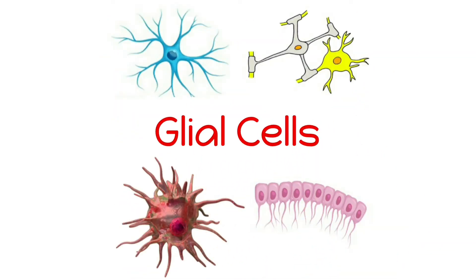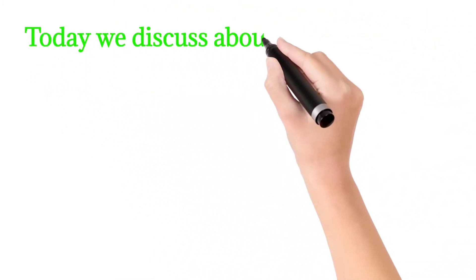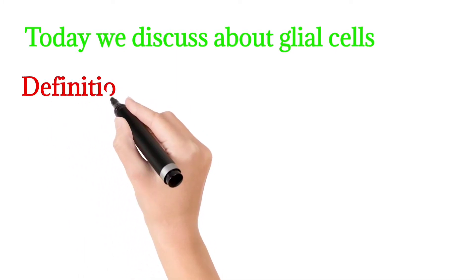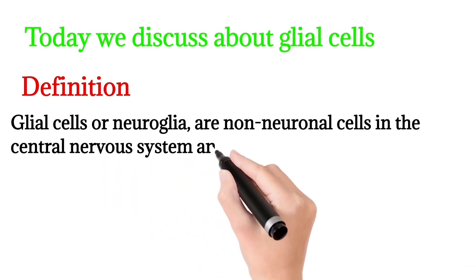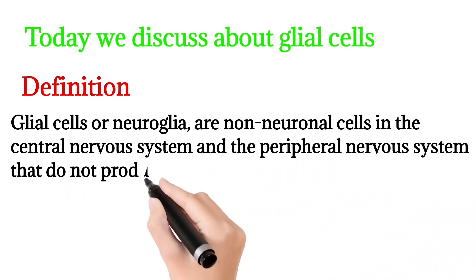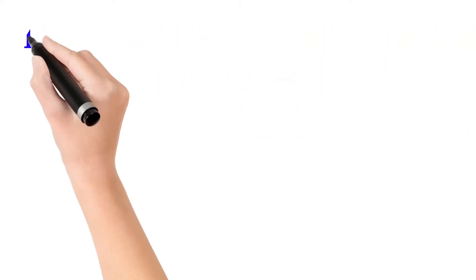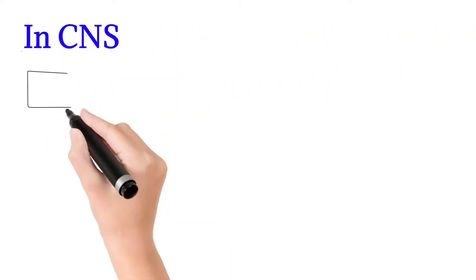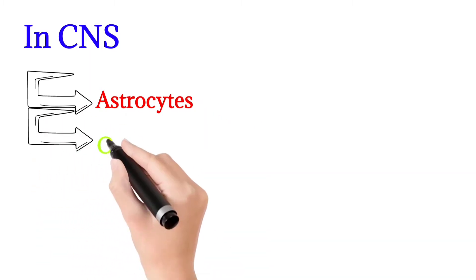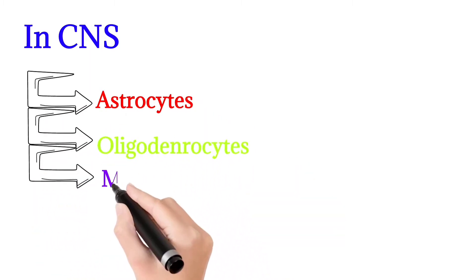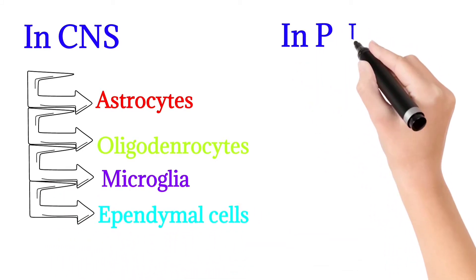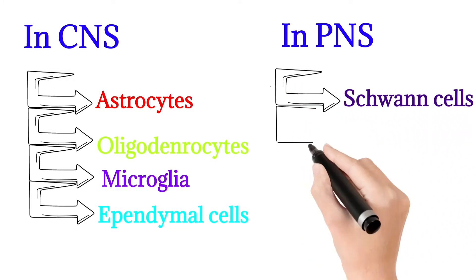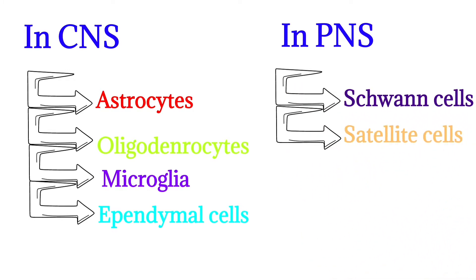Today we will talk about glial cells. Glial cells, or neuroglia, or non-neuronal cells, are present in the central nervous system and peripheral nervous system. They do not produce electrical impulses. In the central nervous system, the types include astrocytes, oligodendrocytes, microglia, and ependymal cells, while in the peripheral nervous system, Schwann cells and satellite cells are present.